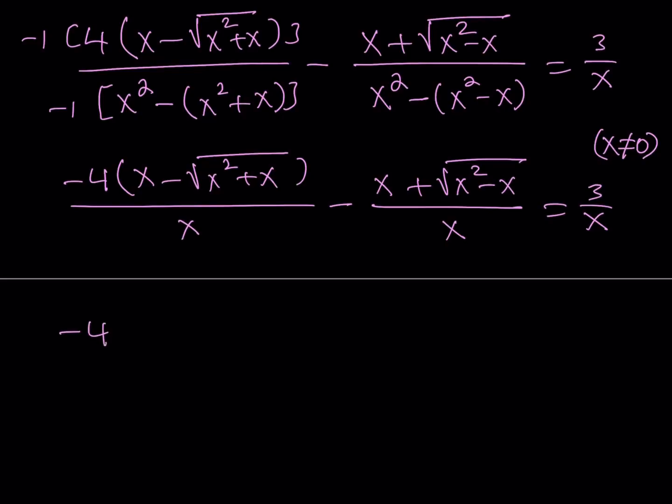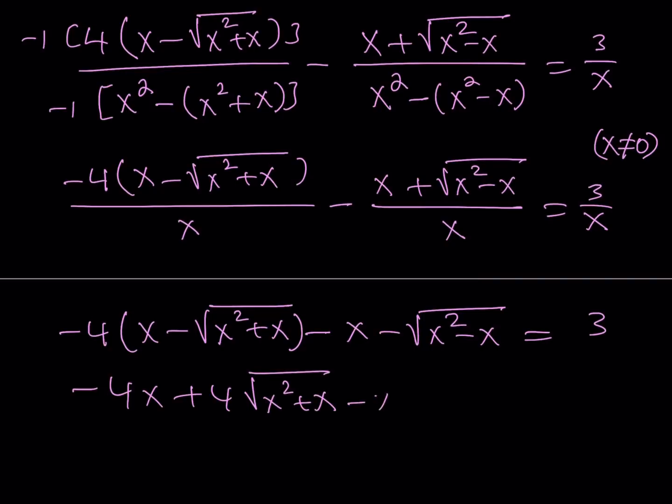This gives us negative 4 times the quantity x minus the square root of x squared plus x, minus x minus the square root of x squared minus x equals 3. Let's go ahead and distribute the negative 4. Negative 4x plus 4 times the square root of x squared plus x, minus x minus the square root of x squared minus x equals 3.